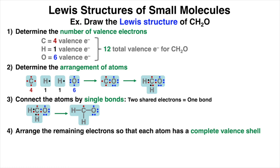Step four is to arrange the remaining electrons so that each atom has a complete valence shell. Since neither carbon nor oxygen has a full octet yet, the unpaired electrons will be shared between carbon and oxygen to form a double bond, or a pi bond. Now that all atoms have achieved an octet, we're going to assign formal charges.